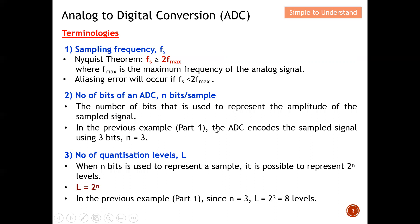In the previous example in Part 1, I had two examples: one where n equals 1, and another where n equals 3. Next, we talk about number of quantization levels L. When n bits are used to represent a sample, it is possible to represent 2^n levels. This means quantization level L equals 2 to the power of n, where n is the number of bits. When n equals 3, quantization level equals 2 to the power of 3, which is 8 levels.